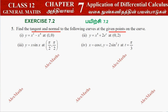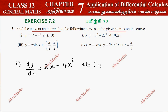The first step is to get the differentiation. dy/dx is 2x minus x⁴, so derivative is 4x³. Now at point (1, 0), substitute x = 1: 2 into 1 minus 4 into 1 cubed gives total minus 2. This is the slope value.